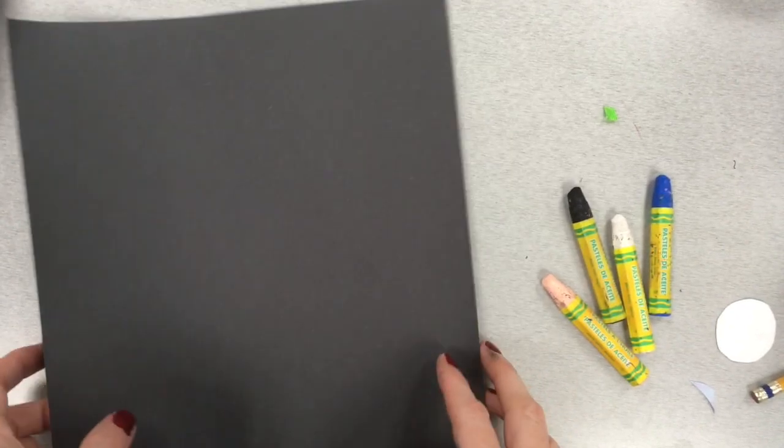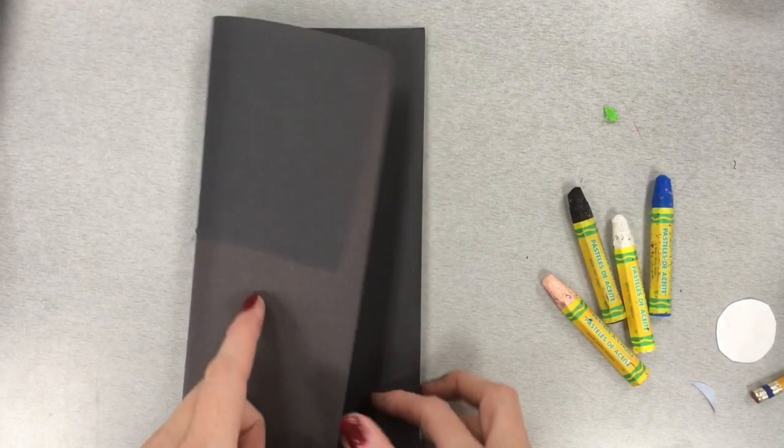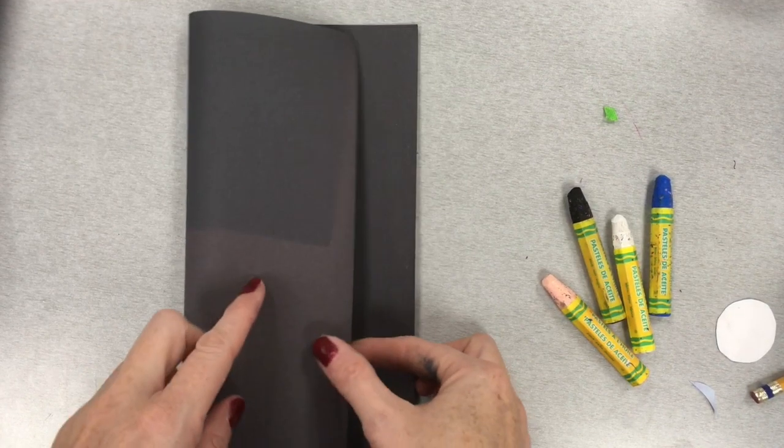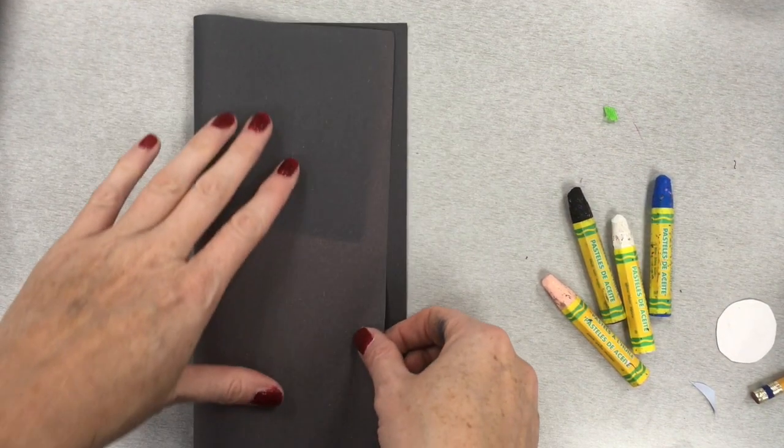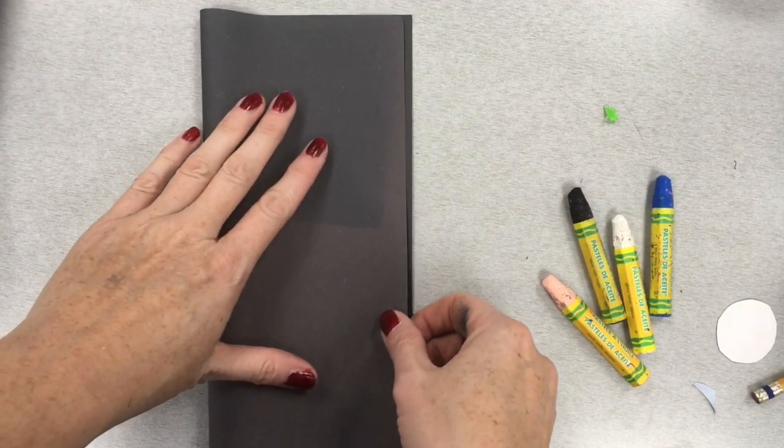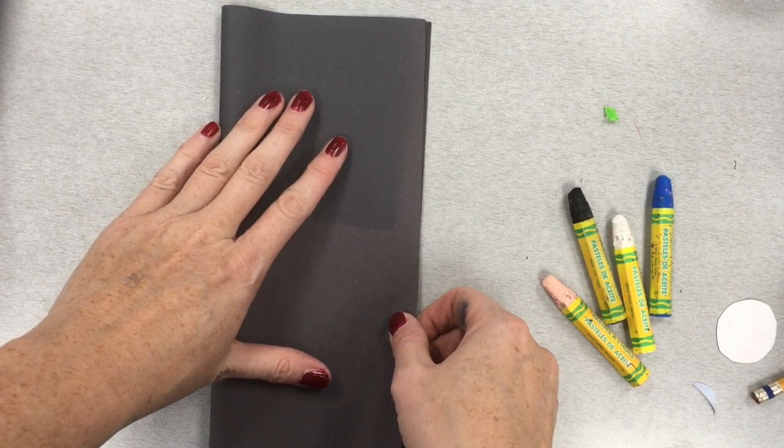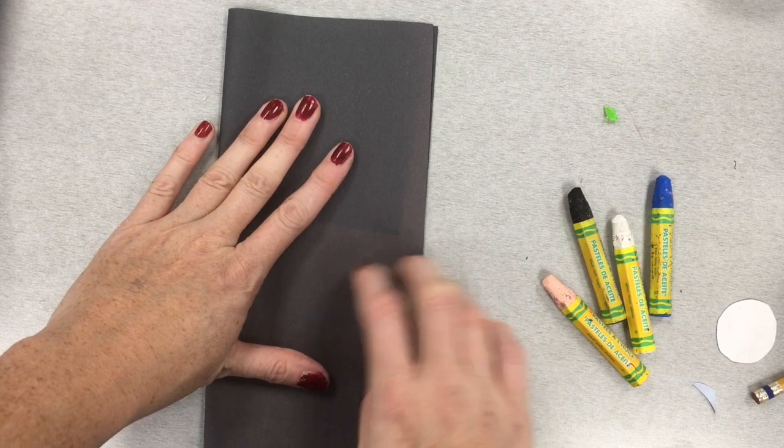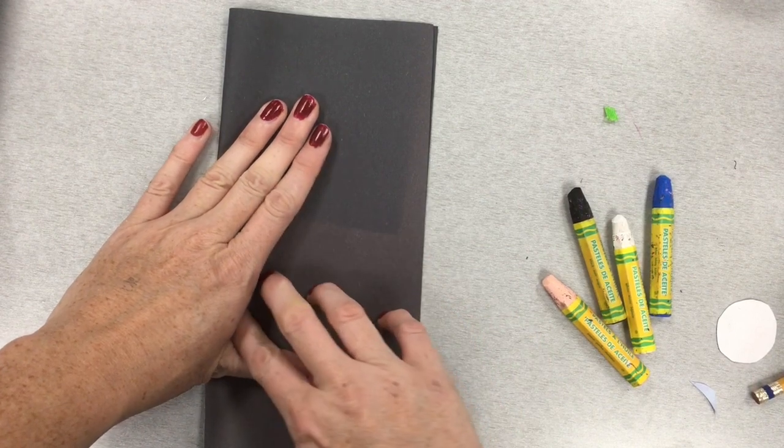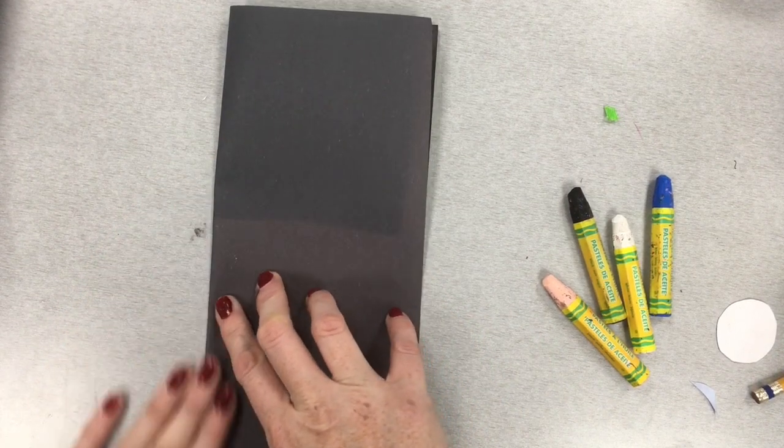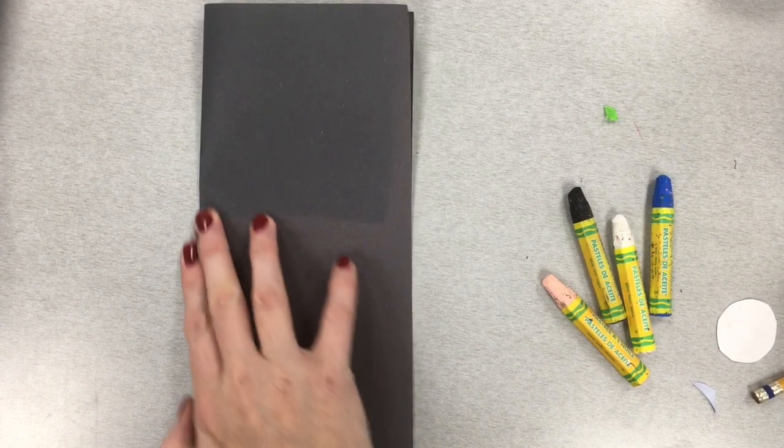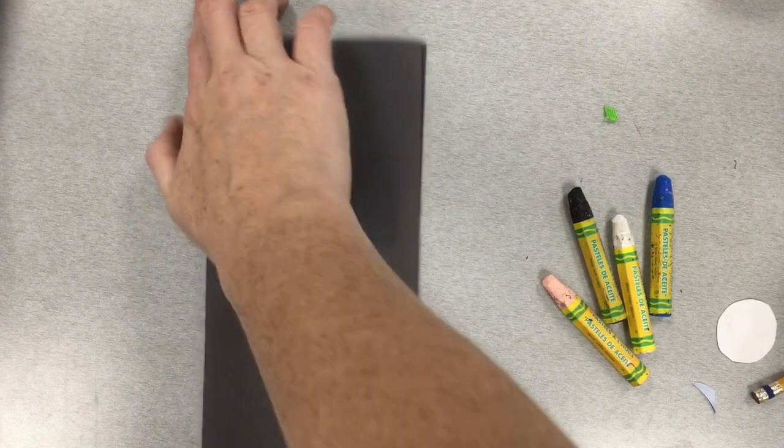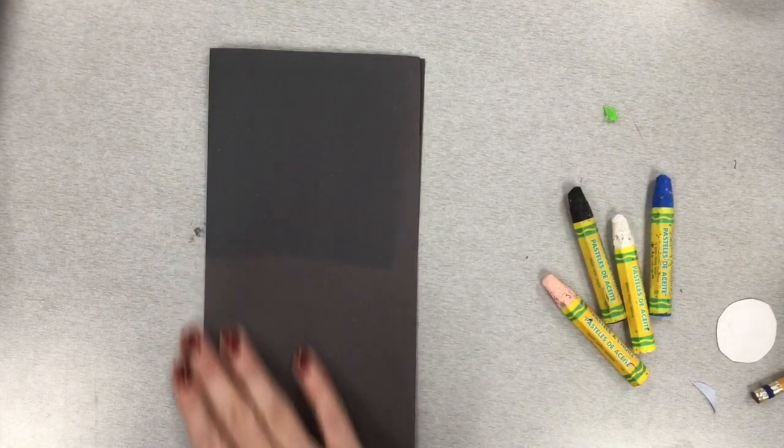Take your piece of black paper and fold it in half, going the length of the paper. This is called a hot dog fold. Some people have called folds hamburger or hot dog. A hamburger is the thicker fatter fold and this is the thinner fold. You want it to be thin from side to side. Take it and crease it down the middle and then you're going to leave it just like that.